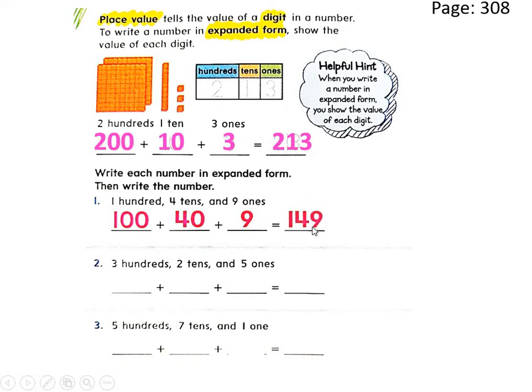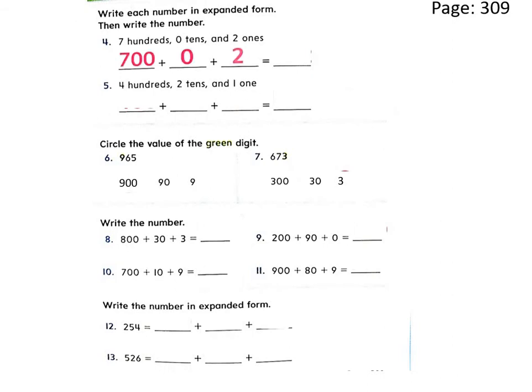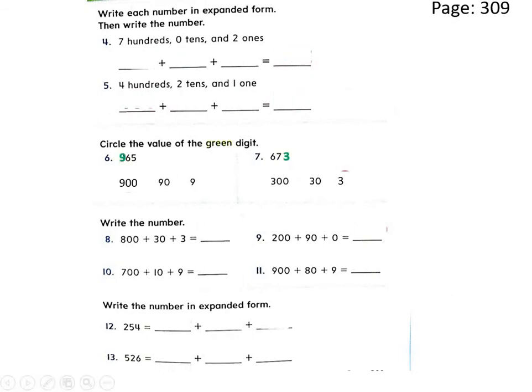Now it's your turn, Grade Two. Try to solve questions two and three by yourself, and when you finish you can check your answers. Do the same for questions number four and five — circle the value of the green digit.